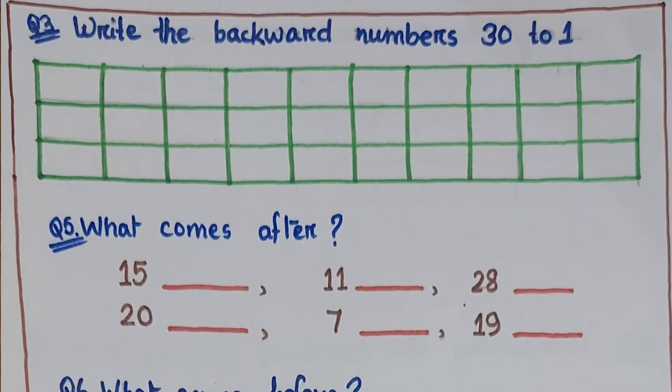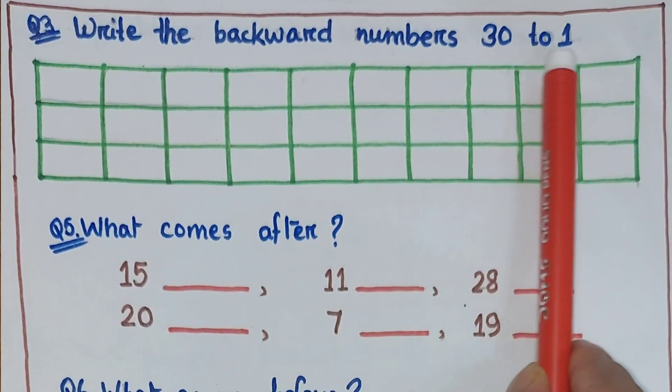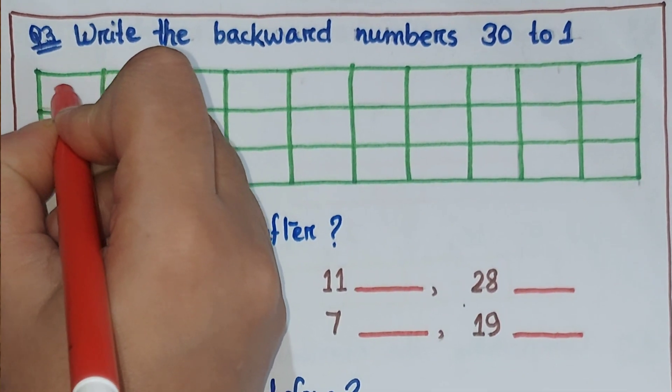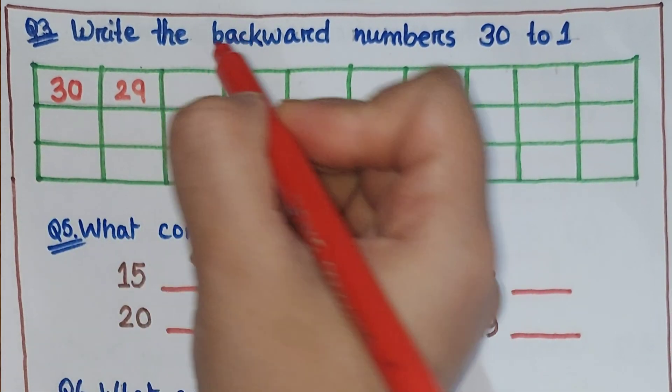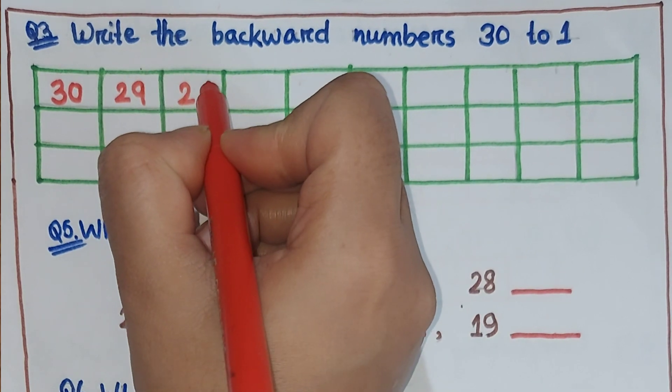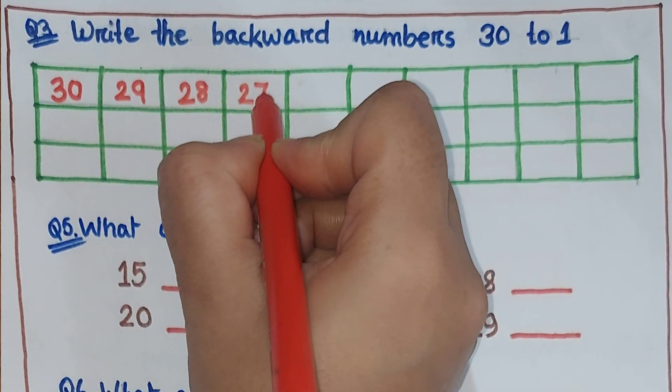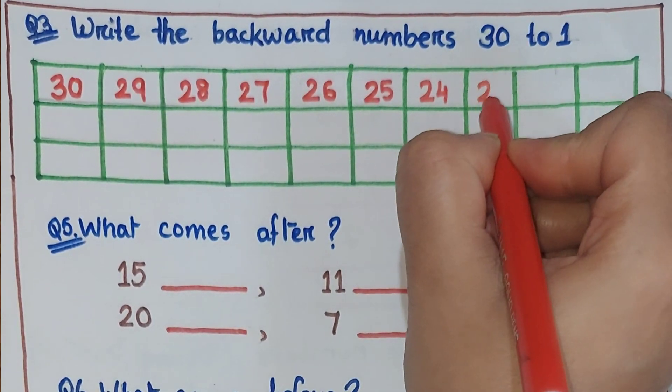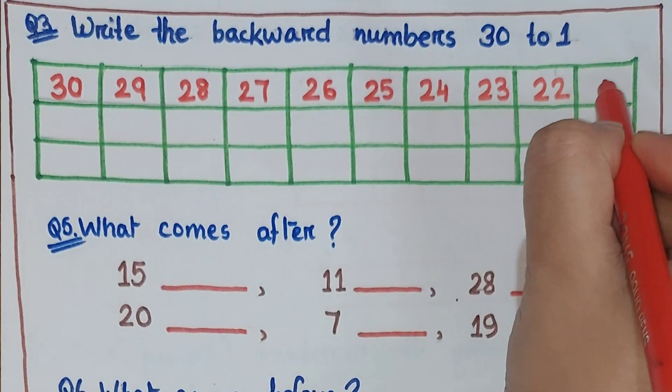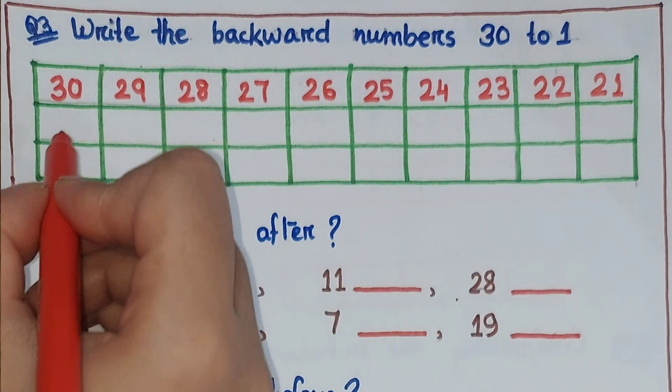Next, write the backward numbers from 30 to 1: 30, 29, 28, 27, 26, 25, 24, 23, 22, 21, continuing down to 1.